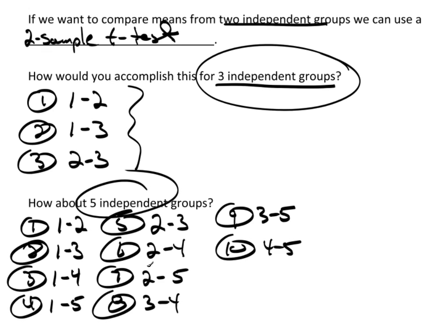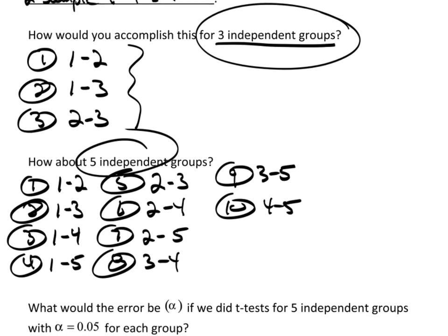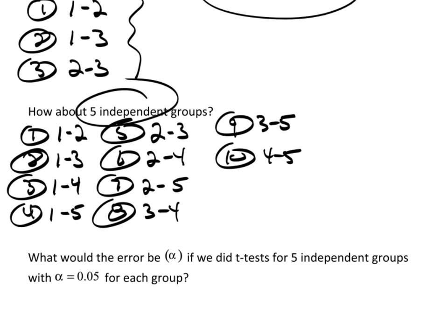Right away, I think you can see, if I had six or seven groups, this gets crazy. Not only does it get crazy, but we need to think of the error rate. What happens to the probability of a type 1 error? If I set alpha 0.05 for each group, and I'm doing 10 different t-tests, we have a problem.